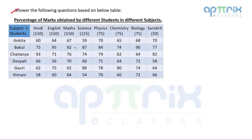Take any one data point to understand the entire table. For example, let's take the value 74. This 74 means marks scored by Chaitanya in Science is 74%, because all values in this table are in percentage. The base for this percentage is the maximum marks for Science — so 74% of 125 gives the actual marks scored by Chaitanya. This is how you read the dataset: each cell gives the percentage mark obtained in that subject by that student.